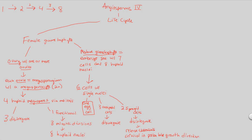So we have one egg cell, three antipodal cells, and two synergid cells — that accounts for six cells with six nuclei. The seventh cell is called the central cell. It's a large cell that contains two nuclei, bringing our total to eight nuclei. This is why we have the seemingly odd orientation of seven cells but eight nuclei — because one cell, the central cell, has two nuclei within it.